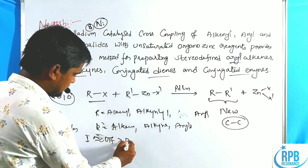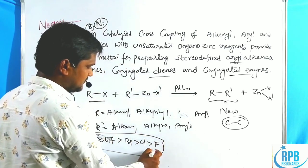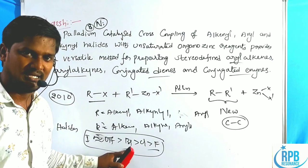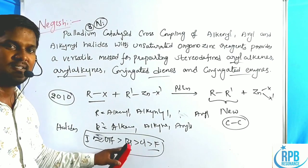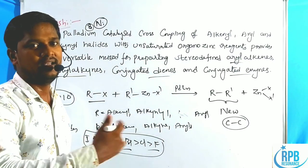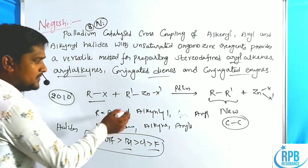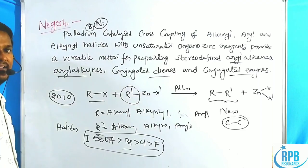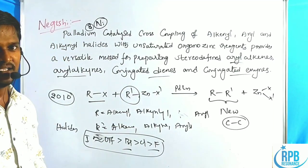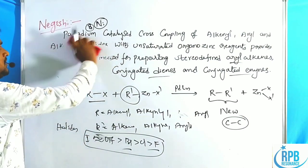So whenever fluorine and bromine are both present, we select the bromine only. When chlorine and bromine are present, bromine is selected. When iodine and bromine are both present, iodine readily reacts with the R'-zinc compound. This is the basic introduction. Now let us discuss the catalytic cycle of Negishi coupling.